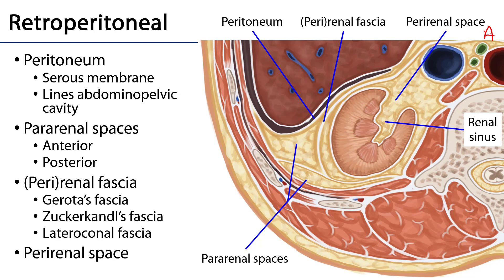Orienting ourselves: anterior, posterior, and midline are identified, with the right side indicated by the position of the liver. This is an inferior view. The kidney is outlined as the star of the show, and we can see it situated in the retroperitoneal space, with the parietal peritoneum outlined.